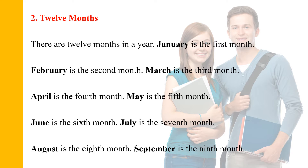January is the first month. February is the second month. March is the third month. April is the fourth month. May is the fifth month. June is the sixth month.